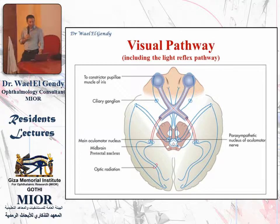The light reflex passes in the optic nerve to the chiasma and then to the optic tract, and then leaves the optic tract to go to the pretectal nucleus in the posterior midbrain. The pretectal nucleus gives bilaterally to the main oculomotor nuclei on both sides, and then from the oculomotor nucleus, the fibers to the pupil go to the ciliary ganglion, and from the ciliary ganglion to the constrictor pupillae, giving you the reflex for pupillary constriction in both eyes in response to stimulation of one eye.